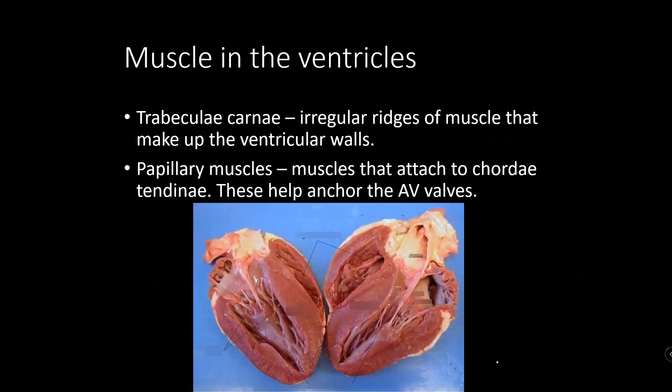To summarize the muscle types: the trabeculae carneae is muscle in the ventricles not attached to anything; papillary muscle is muscle in the ventricles attached to those little strings, the chordae tendineae. That is a good place for this video to stop.